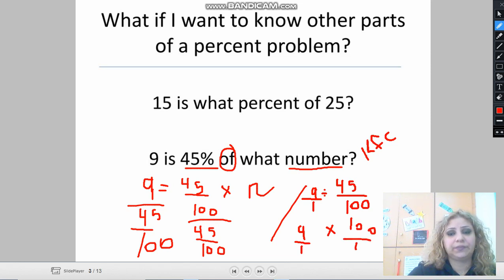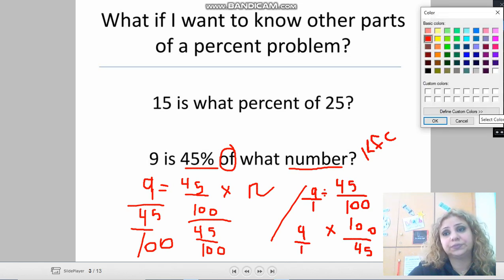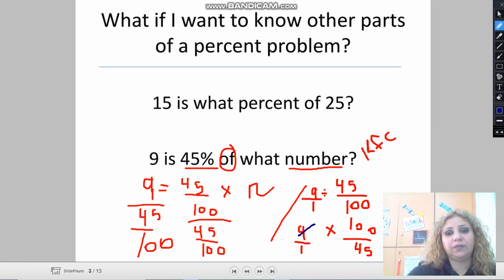Now let us simplify before we multiply. We can use the butterfly way, or you can multiply then simplify. Or I can just cross out. Because 9 and 45 are both divisible by 9, and 45 divided by 9 is 5. Then divide 100 by 5, which is 20. So the answer is 20.